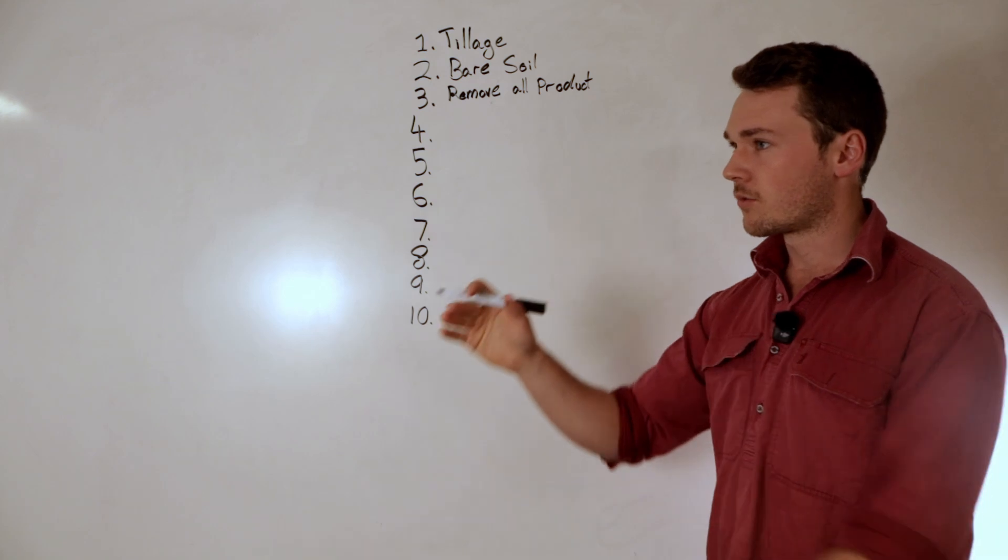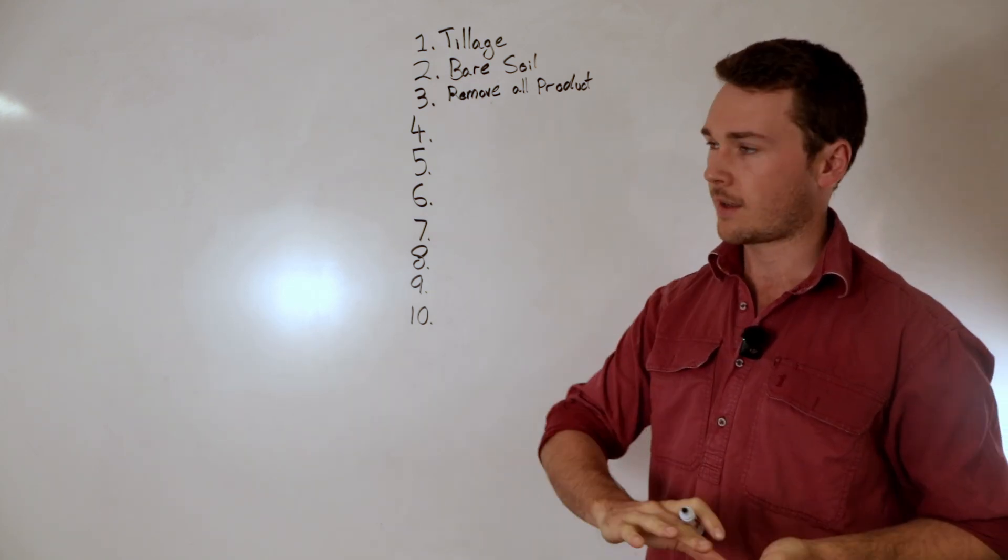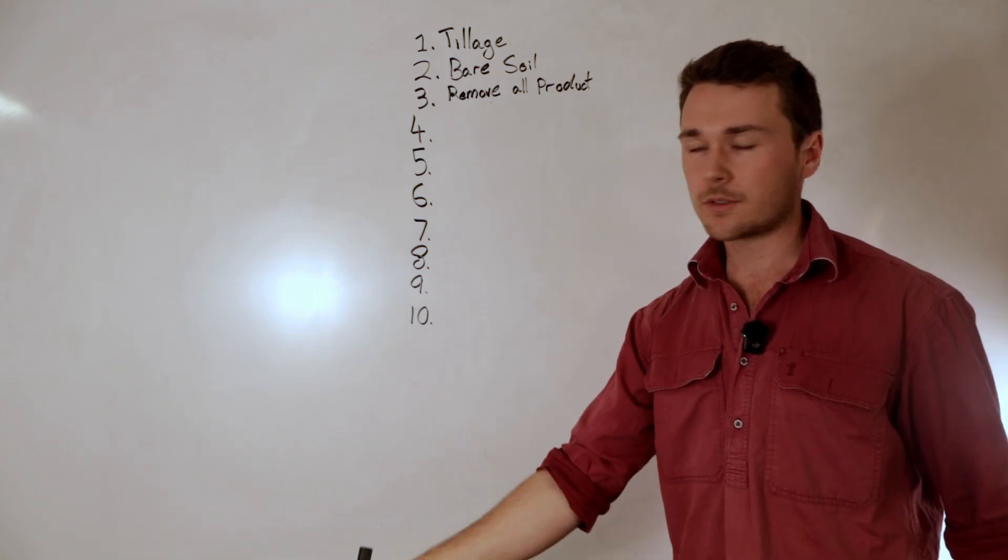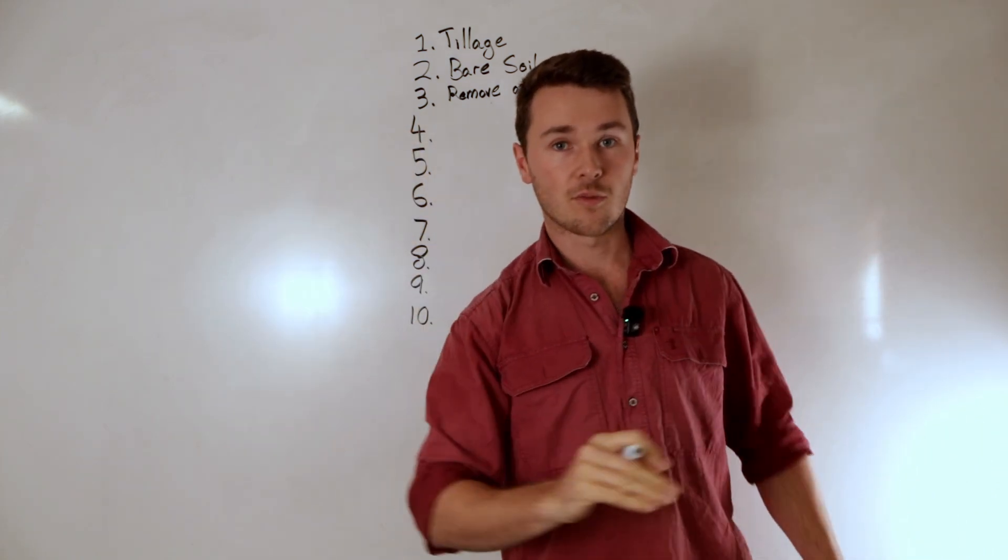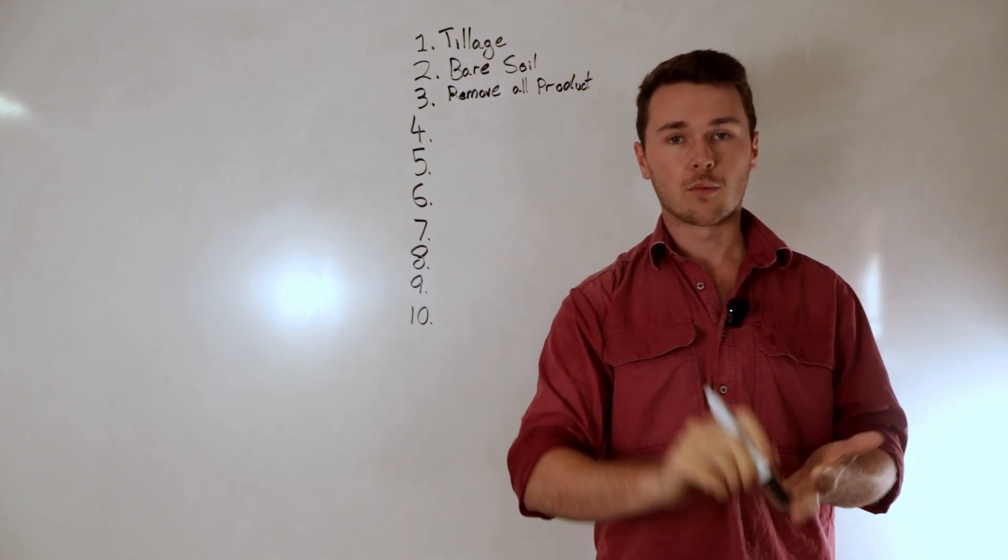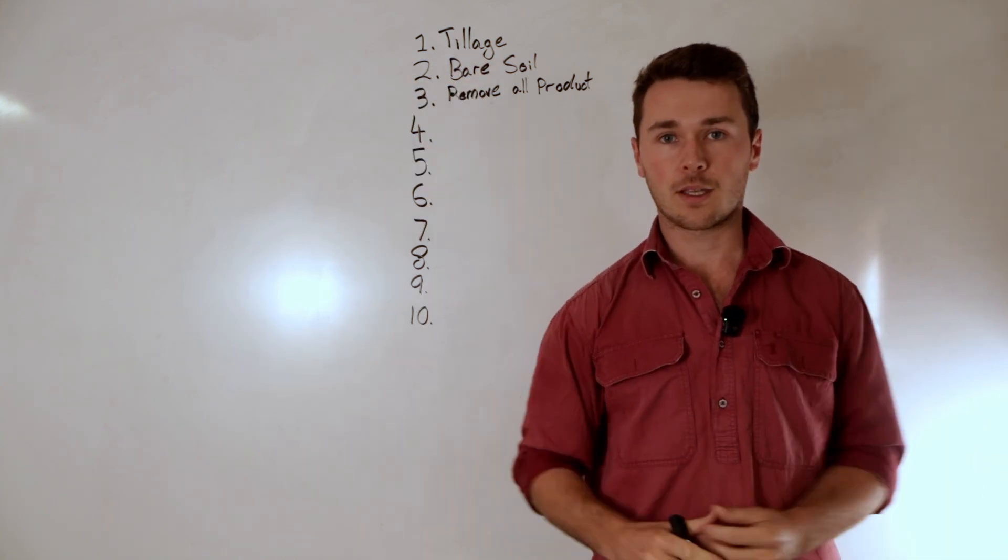So if I want to destroy the soil really what I would be wanting to do is grow as much as possible and then take it all off farm so none of that is recycling. That way we have nothing to then feed back to the soil and for our next crop. So fantastic way to destroy soil is to remove all products. So that is not only hay paddocks but also removing all stubble. So really removing as much as possible.